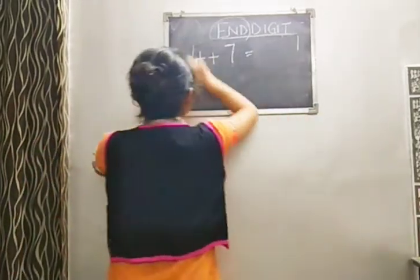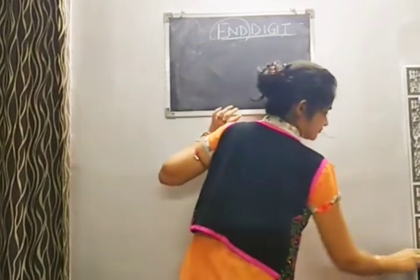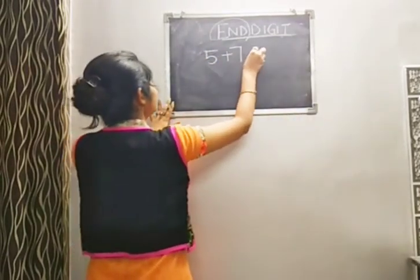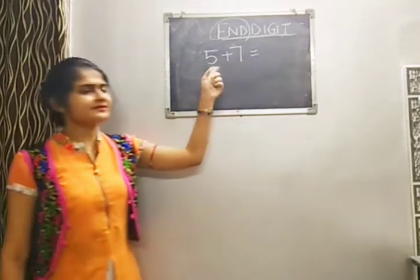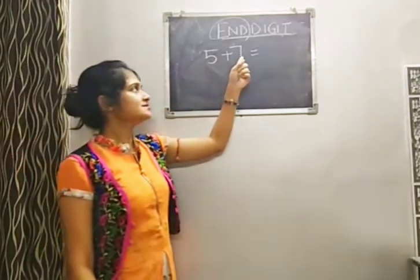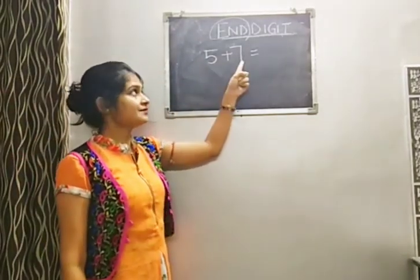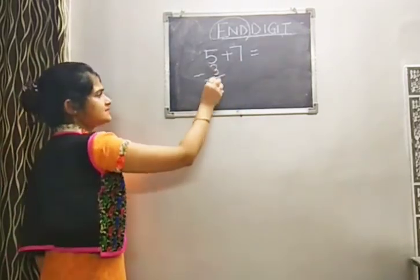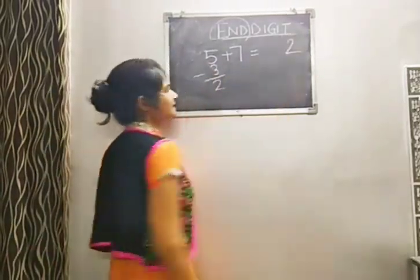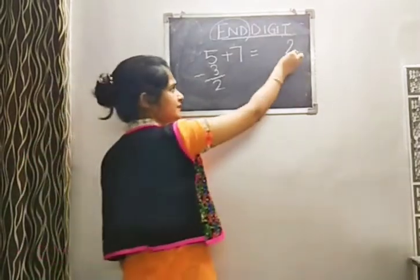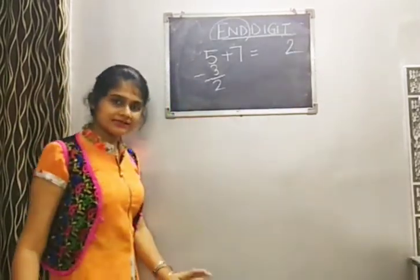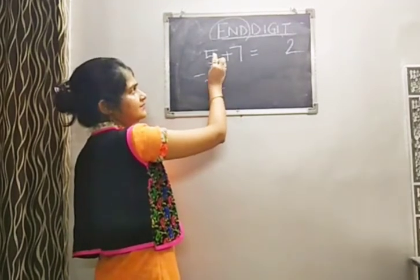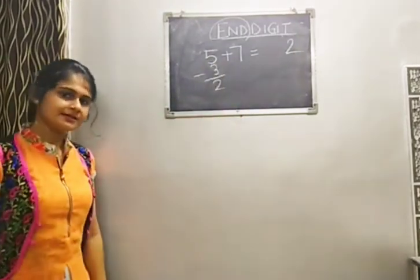Suppose 5 plus 7. Which one is the greatest? 7. Lowest is 5. Complement of 7 is 3. Subtract: 5 minus 3 equals 2. End digit is 2. That means 12 is the answer. Cross check: 7, 8, 9, 10, 11, 12. Correct! Understood?